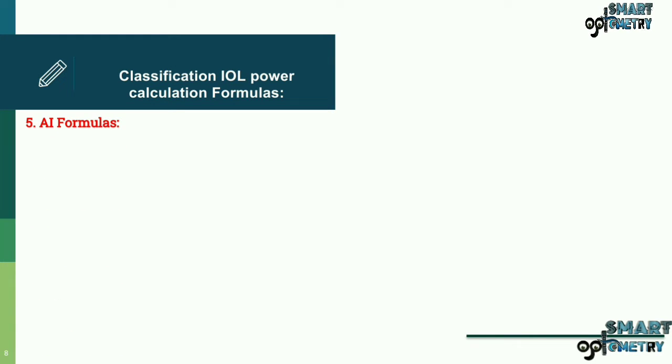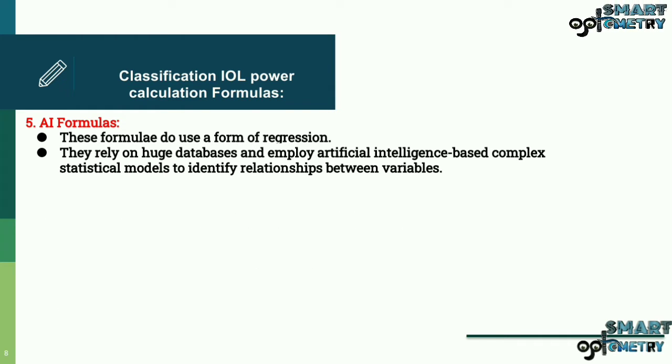Now artificial intelligence formulas. These formulas do use a form of regression. They rely on huge databases and employ artificial intelligence-based complex statistical models to identify relationships between variables.